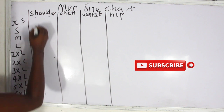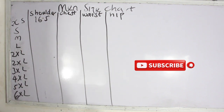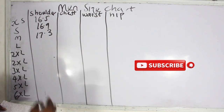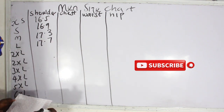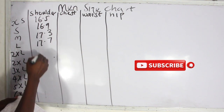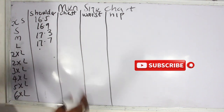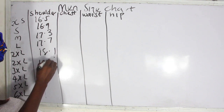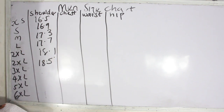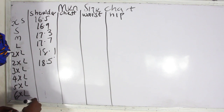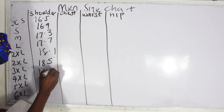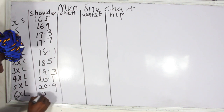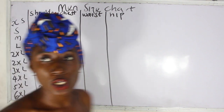For the male size chart, the shoulder measurements are: extra small — 16.5 inches, small — 16.9 inches, medium — 17.3 inches, large — 17.7 inches, XL — 18.1 inches, 2XL — 18.5 inches, 3XL — 19.3 inches, 4XL — 20.1 inches, 5XL — 20.9 inches, 6XL — 21.7 inches.